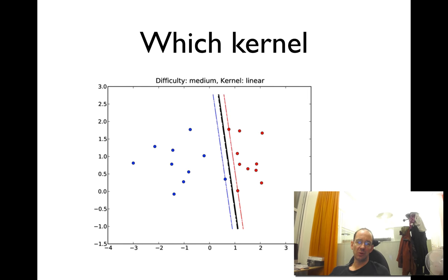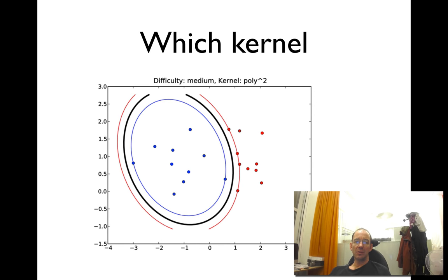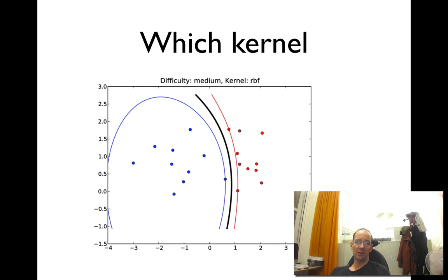In an easy case, you have linear kernels that just separate these cases. You can find a nice line here. However, you have a polynomial kernel that separates things like that, or even an RBF kernel that can separate things like this.